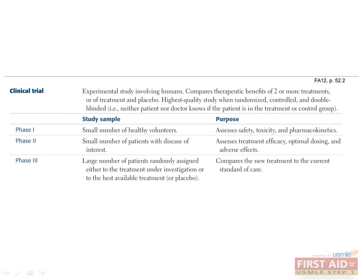Phase three clinical trials study a large number of patients, often in the thousands, depending on disease prevalence. Patients are randomly assigned to either the treatment under investigation, the best available treatment, or placebo if there is no approved treatment. These studies compare the new treatment to the current standard of care, and it's at this stage that the treatment may or may not receive FDA approval. Finally, phase four clinical trials are designed as post-marketing surveillance trials of patients after drug approval in an effort to detect rare or long-term adverse effects.